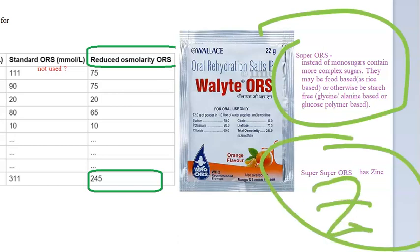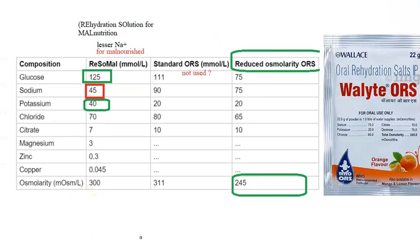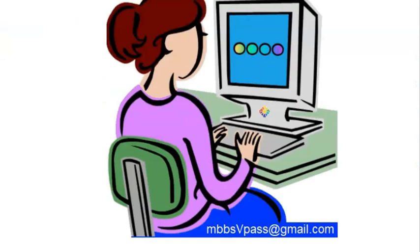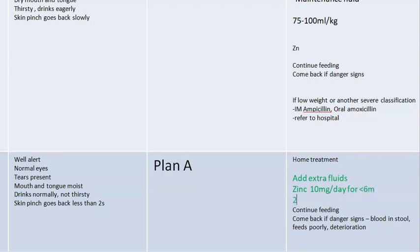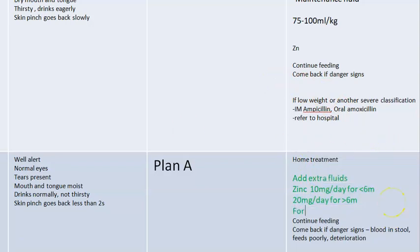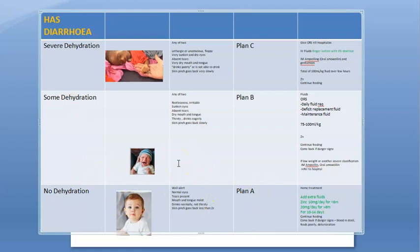Super Super ORS contains zinc, which helps regenerate the intestinal epithelium and reduces diarrhea frequency. The zinc dosage is 10 mg per day for children less than six months and 20 mg per day for children greater than six months. Zinc should be given for 10 to 14 days. So to summarize: standard ORS (reduced osmolarity), RESOMAL (for malnutrition), super ORS (complex sugars), super super ORS (with zinc), and specific zinc dosing.